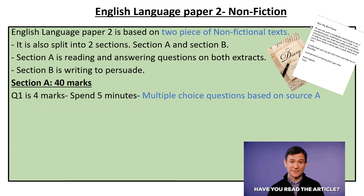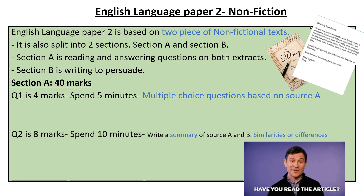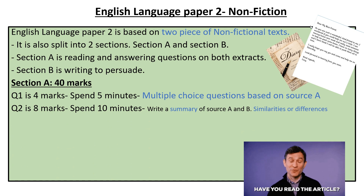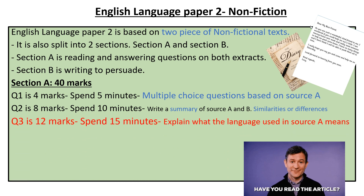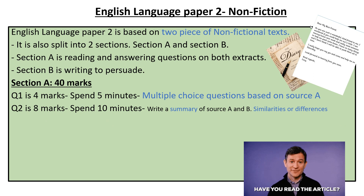Section A is 40 marks. Question 1 for Language Paper 2 is multiple-choice questions based on Source A — spend about five minutes on this. Question 2 is to write a summary of Source A and Source B, covering either similarities or differences. This is an eight-mark question and you're recommended to spend about ten minutes on it. Question 3 is a 12-mark question, and it's essentially the same as Question 2 in Language Paper 1 — explain the language used in the extract.